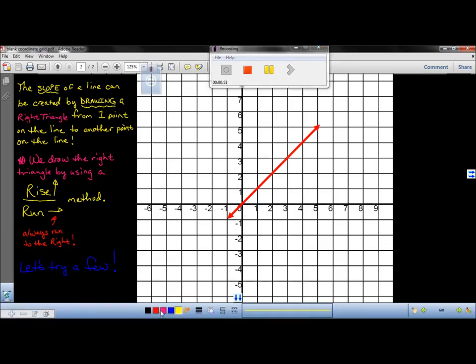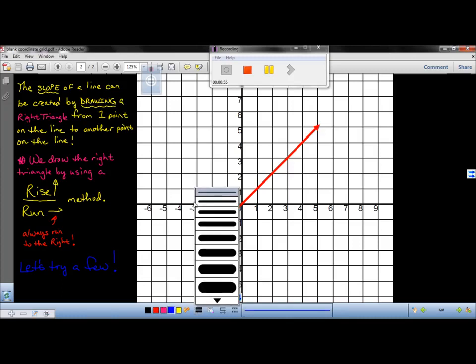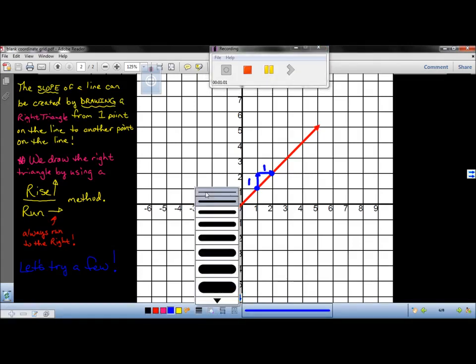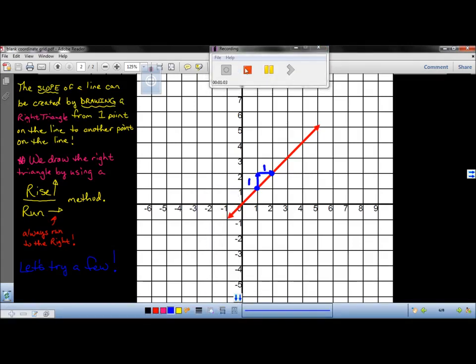So let's try a few of these. We're going to pick any point here on this graph. Let's start here. In fact, I'm going to pick two points from 1-1 to 2-2. Notice that we've made a right triangle using the rise over run method. So the idea here is after we create the right triangle, we want to give it a numerical value.